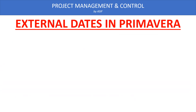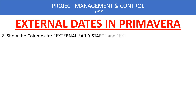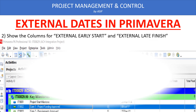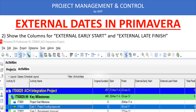At the same time, you can do one more thing. You have to show the columns for external early start and external late finish date in the layout. It will show you all the activities which are assigned these constraints.